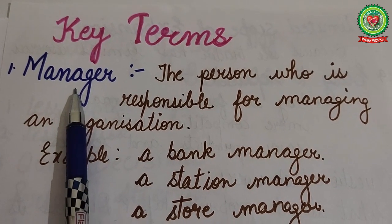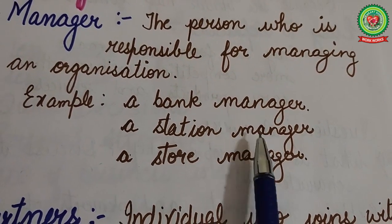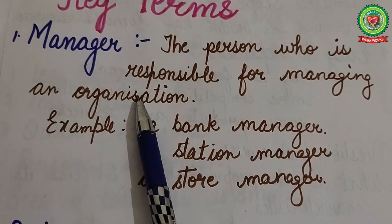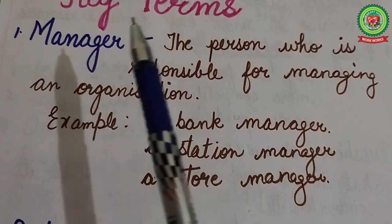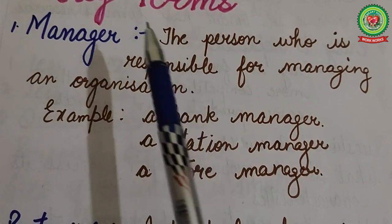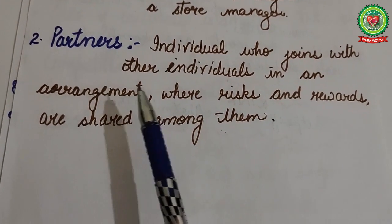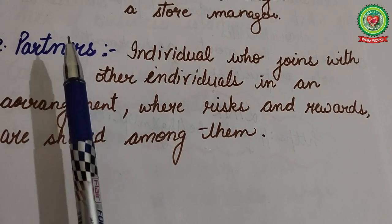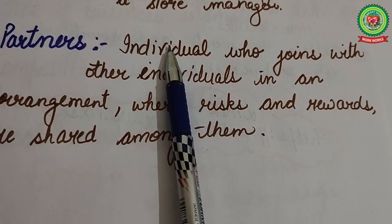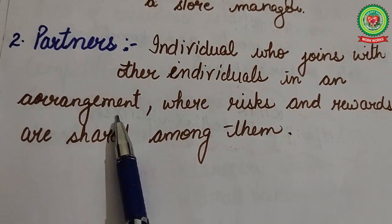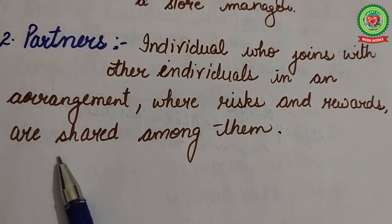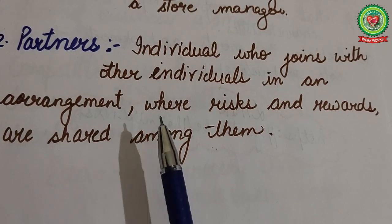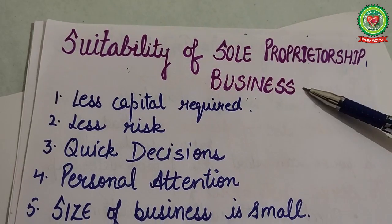First, let's cover our key terms. A manager — for example, a bank manager, a station manager, or a store manager — is a person responsible for managing the working of an organization, and in return receives a salary. A partner is a person who jointly works with others in an arrangement where risks and rewards, meaning profits or losses, are equally shared among them.